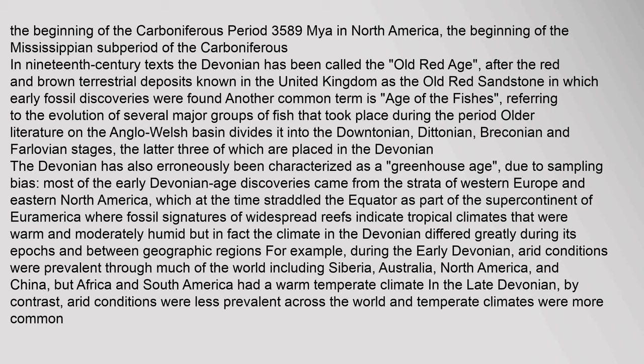The Devonian has also erroneously been characterized as a 'greenhouse age', due to sampling bias — most of the early Devonian age discoveries came from the strata of Western Europe and Eastern North America, which at the time straddled the equator as part of the supercontinent of Euramerica, where fossil signatures of widespread reefs indicate tropical climates that were warm and moderately humid. But in fact the climate in the Devonian differed greatly during its epochs and between geographic regions. For example, during the early Devonian, arid conditions were prevalent through much of the world including Siberia, Australia, North America, and China, but Africa and South America had a warm temperate climate. In the late Devonian, by contrast, arid conditions were less prevalent across the world and temperate climates were more common.